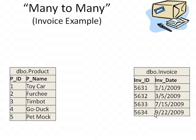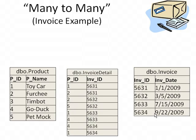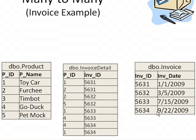Let's use a many-to-many example in the most common form it appears in business databases: the invoice example. What we have here is products and invoices. A product can be ordered many times by many different invoices. An invoice is kind of like a shopping cart when you go online — multiple items go on one invoice. So an invoice can have many products in its cart, and a product can be ordered on many different invoices.